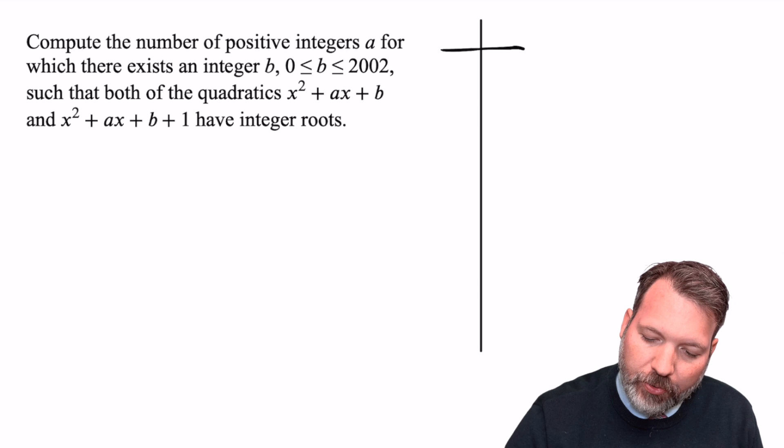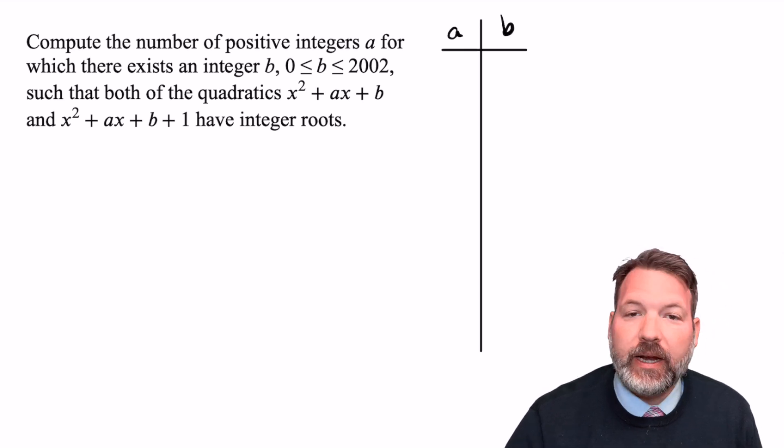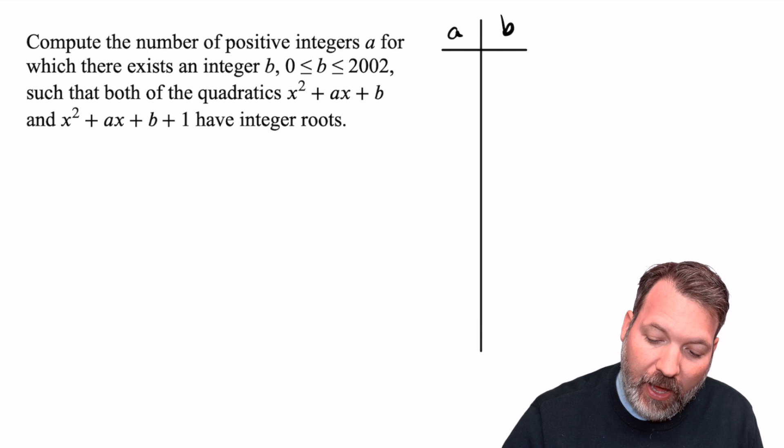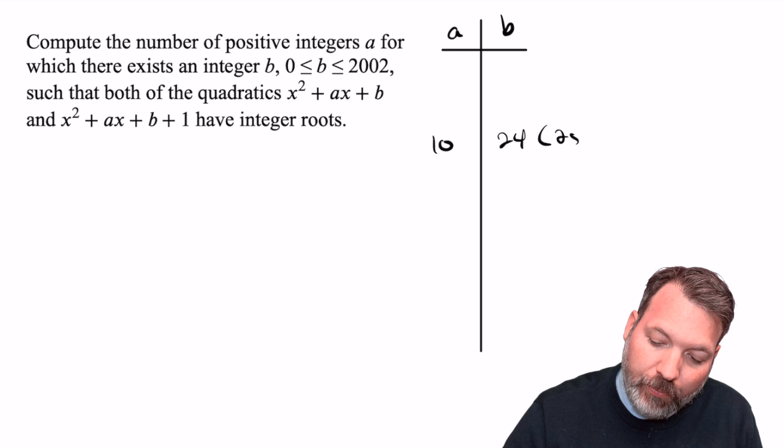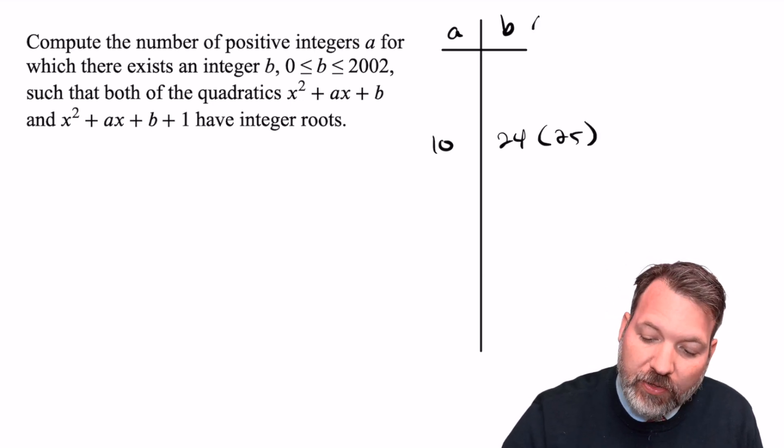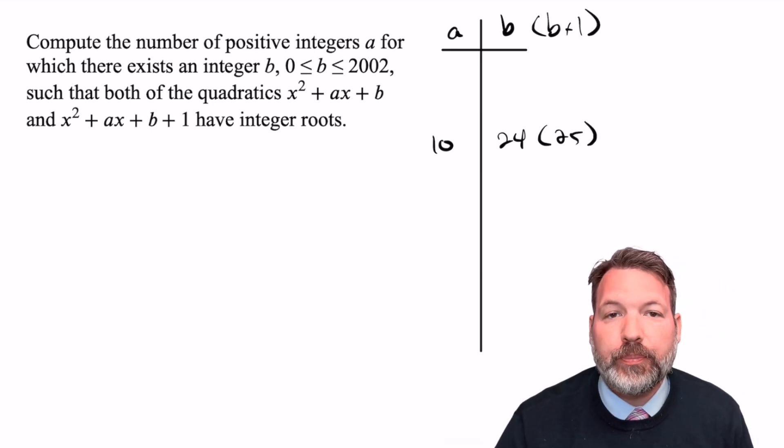And so what I'm going to do is come up with a little chart here for a given A and a given B. For example, when A was 10, as we saw a moment ago, B was 24. And I'm just going to put in parentheses here 25, so that I remember that was the value of the perfect square.